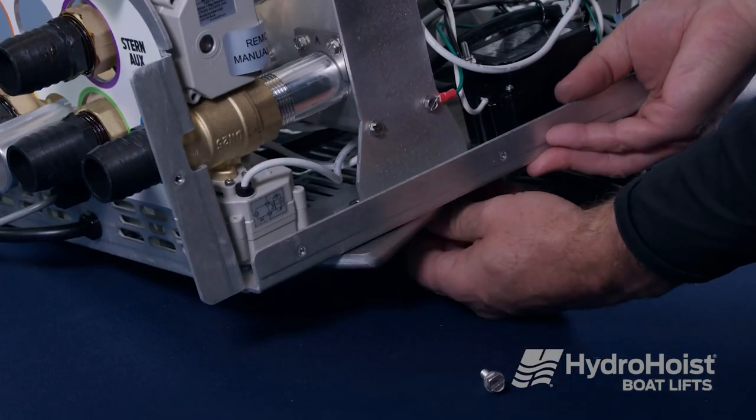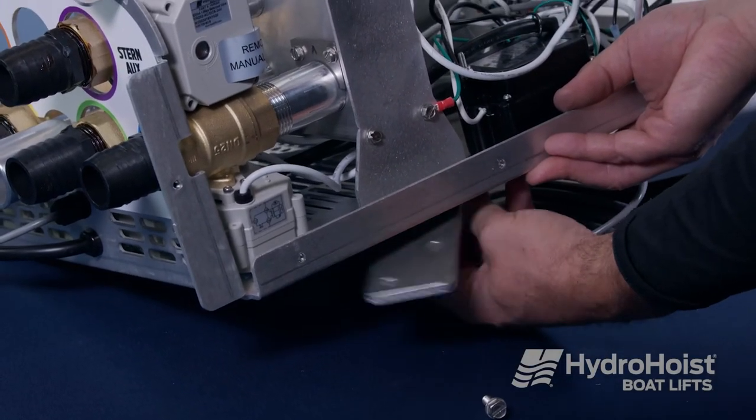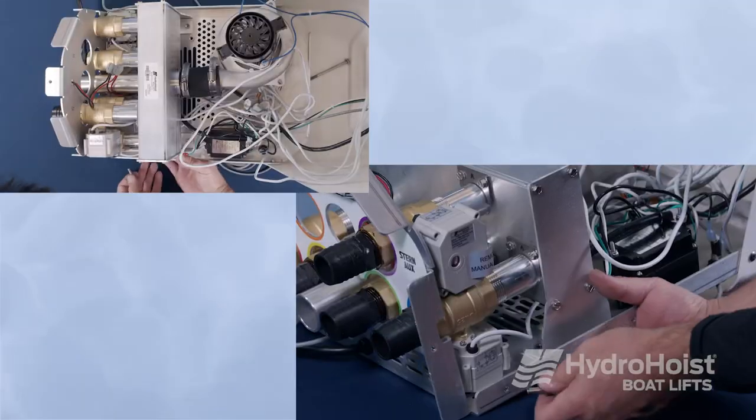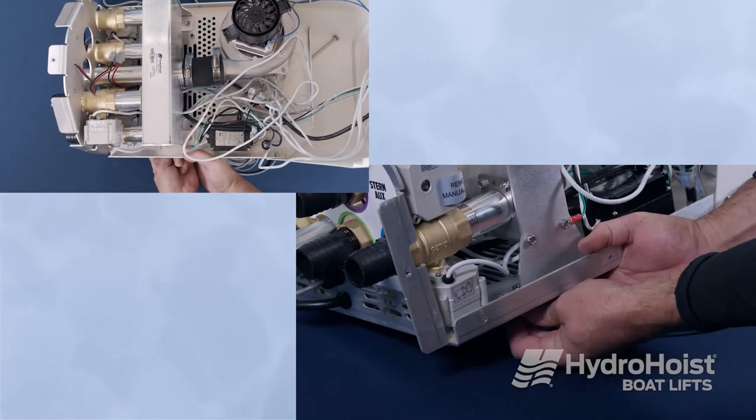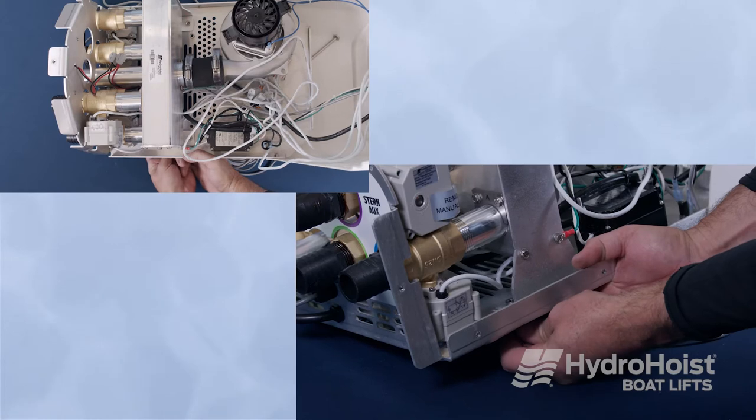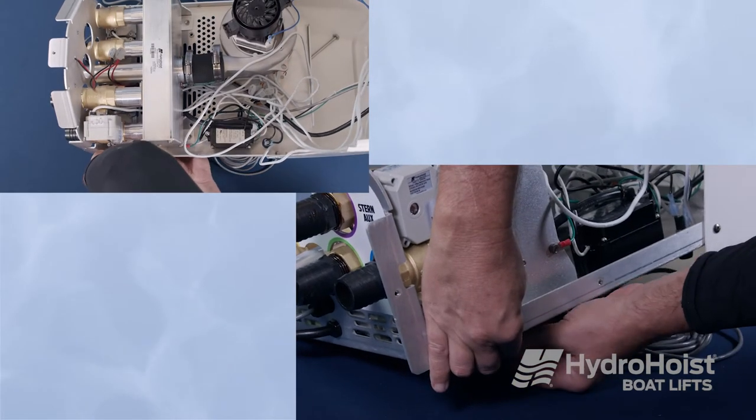Reinstall the two spacer plates and four bolts that secure the air manifold assembly to the rear of the chassis. Reinstall the bolt and spacer that secures the blower to the rear of the chassis. Note the spacer must be reinstalled for the blower to work properly.